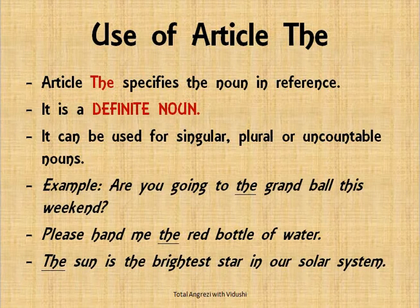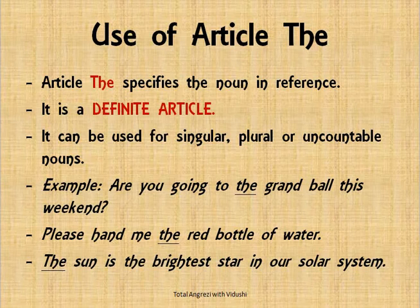Finally, the use of article THE. Article THE specifies the noun in reference — that is why it is called a definite article. It can be used for singular, plural, or uncountable nouns. 'How are you going to the grand ball this weekend?' — There is only one grand ball happening this weekend, so I refer to it specifically using THE. 'Please hand me the red bottle of water' — I'm asking specifically for the red bottle. 'The sun is the brightest star in our solar system' — there is only one sun, so I use THE.